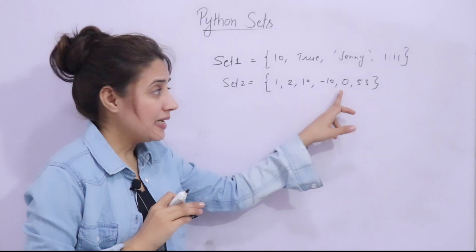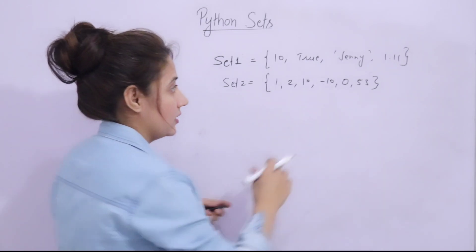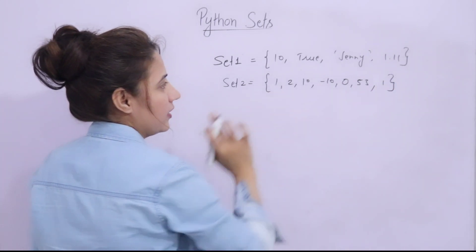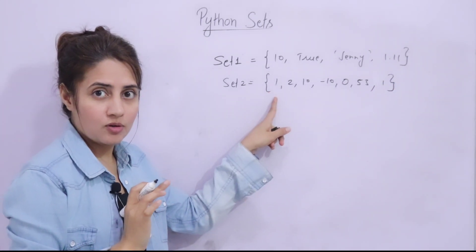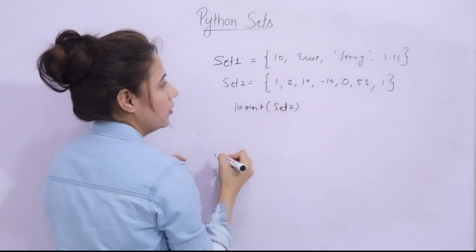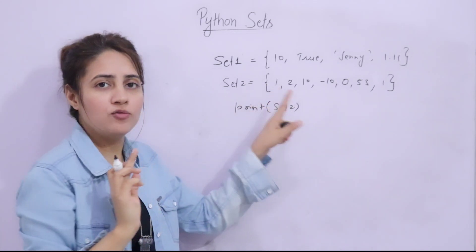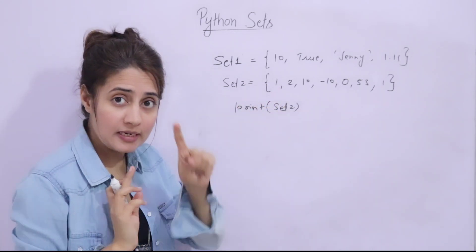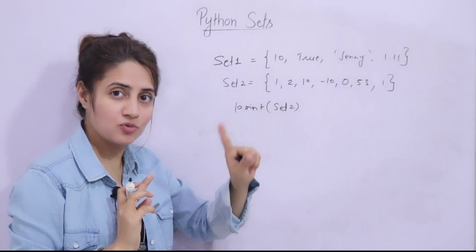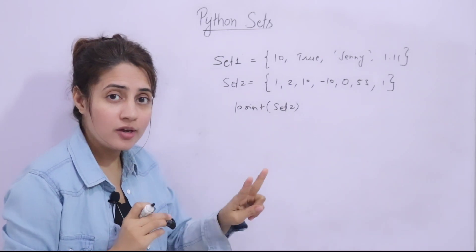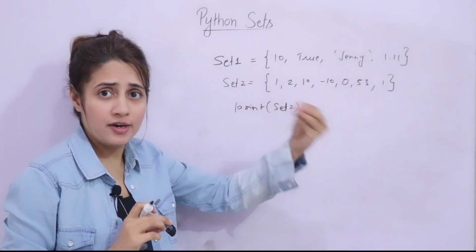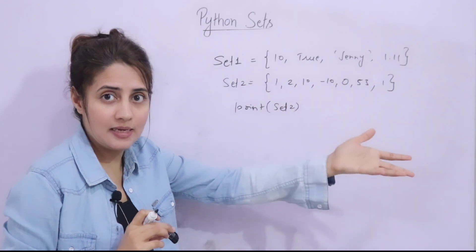One important rule: duplicate items are not allowed in a set. If you write the same value twice, once you print the set, it will appear only one time. In tuples and lists, duplicate items are allowed. Next, set items are unordered — they do not have any defined order like tuples and lists do.